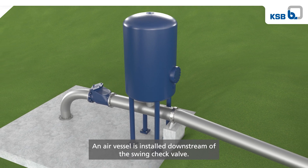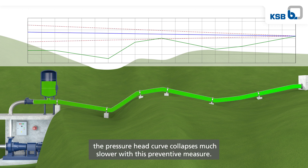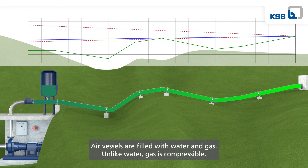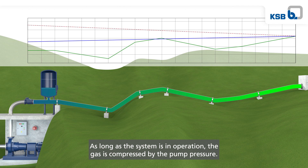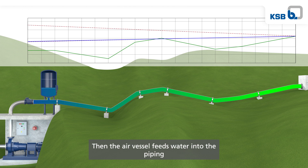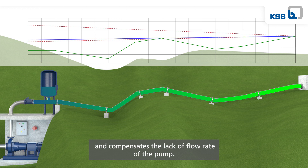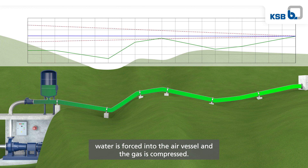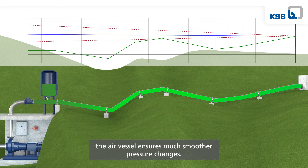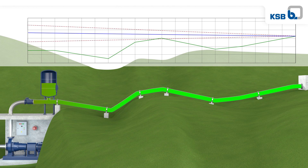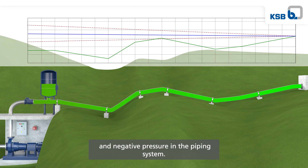An air vessel is installed downstream of the swing check valve. In the event of a pump failure, the pressure head curve collapses much slower with this preventive measure. Air vessels are filled with water and gas; unlike water, gas is compressible. As long as the system is in operation, the gas is compressed by the pump pressure. If the pump fails, the pressure drops and the gas can expand, allowing the air vessel to feed water into the piping and compensate the lack of flow rate of the pump. When a positive pressure wave approaches the air vessel, water is forced into the air vessel and the gas is compressed, reducing the positive pressure. With its compensating effect, the air vessel ensures much smoother pressure changes. In contrast to air valves, this is a closed system — no dirt can be drawn into the piping at negative pressure. Air vessels can significantly reduce both positive pressure peaks and negative pressure in the piping system.